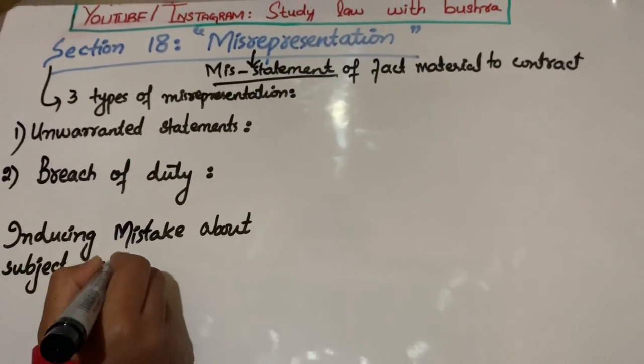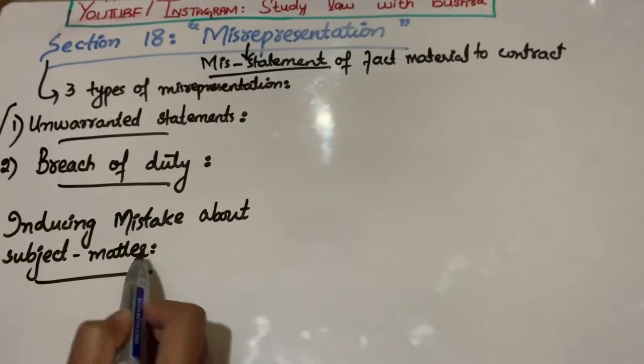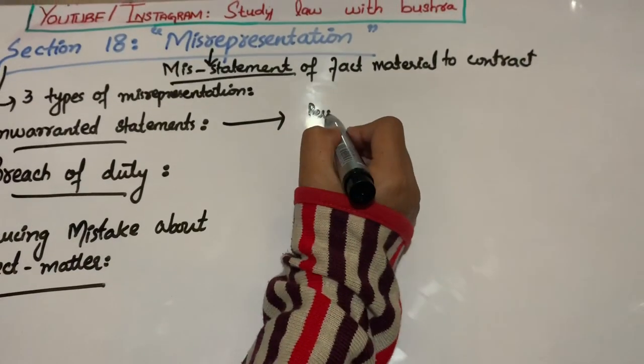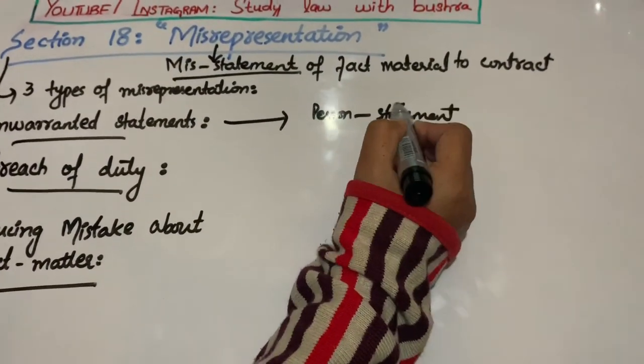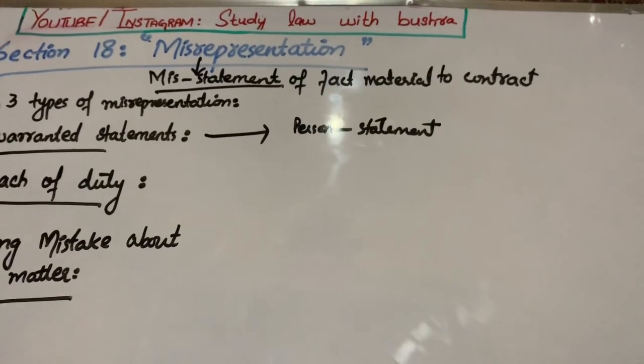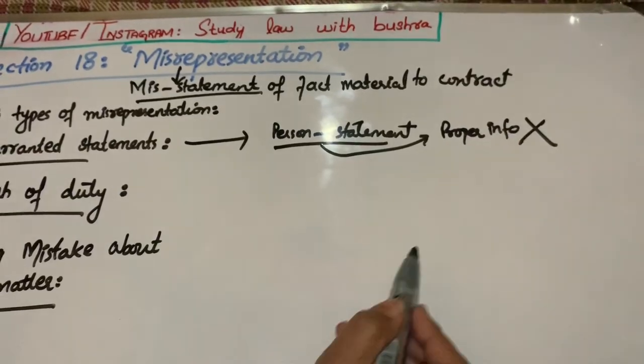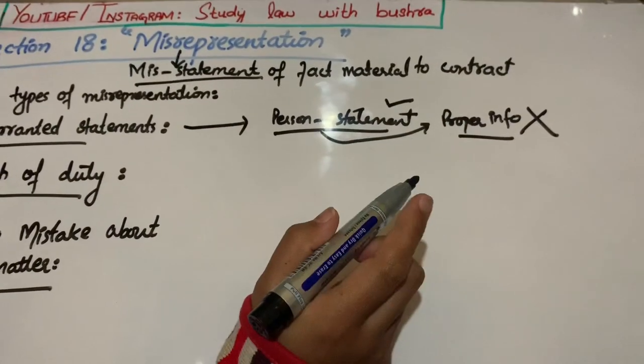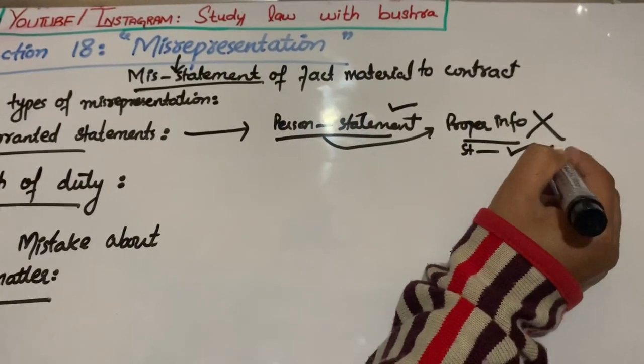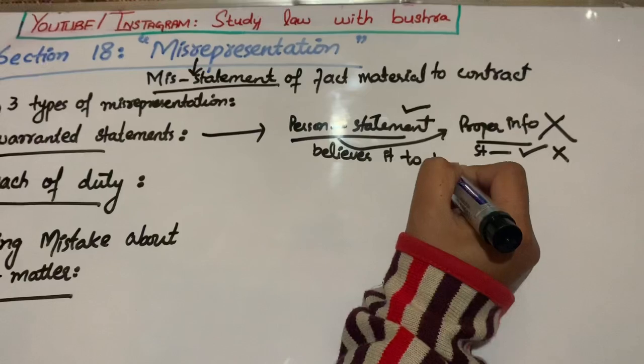سب سے پہلے unwarranted statement کیا ہوتی ہے. Unwarranted statement کا مطلب ہے کہ جب کوئی بندہ کوئی ایسی statement دیتا ہے جس کے بارے میں اس کو خود proper information نہیں ہے. اس کو نہیں پتا کہ جو statement میں دے رہا ہوں whether وہ true ہے یا false - اس کو کچھ نہیں پتا. لیکن وہ believe کرتا ہے، اسے لگتا ہے کہ جو میں کہہ رہا ہوں وہ بالکل ٹھیک ہے.